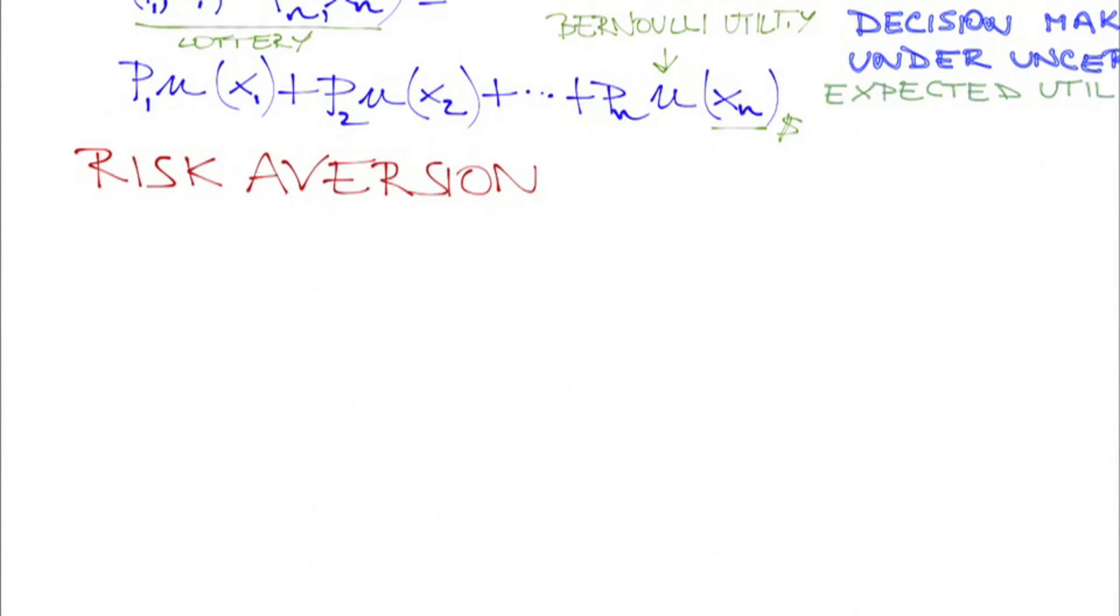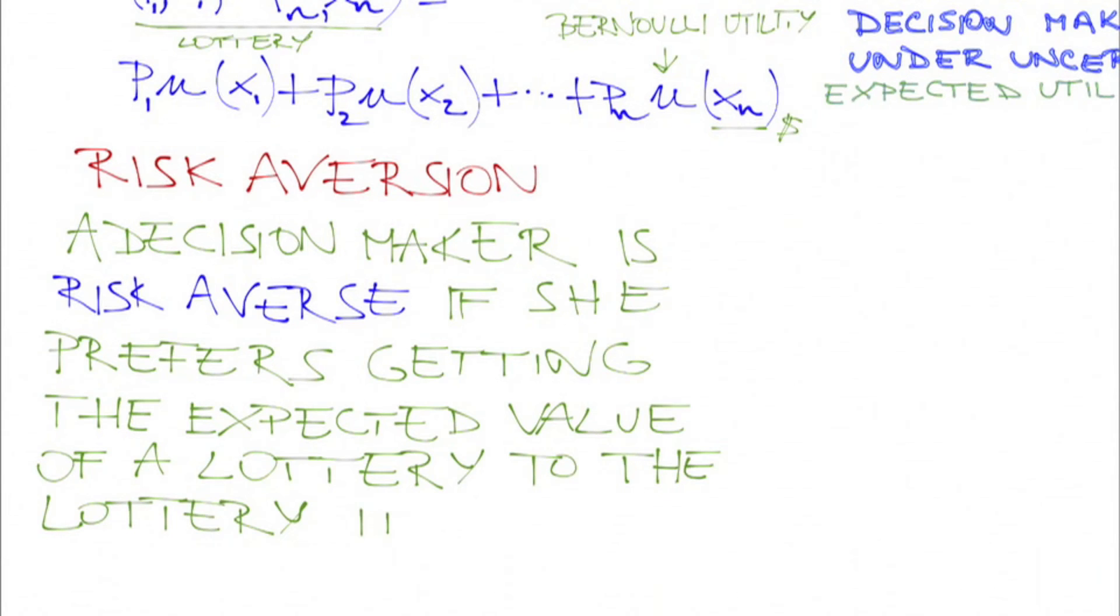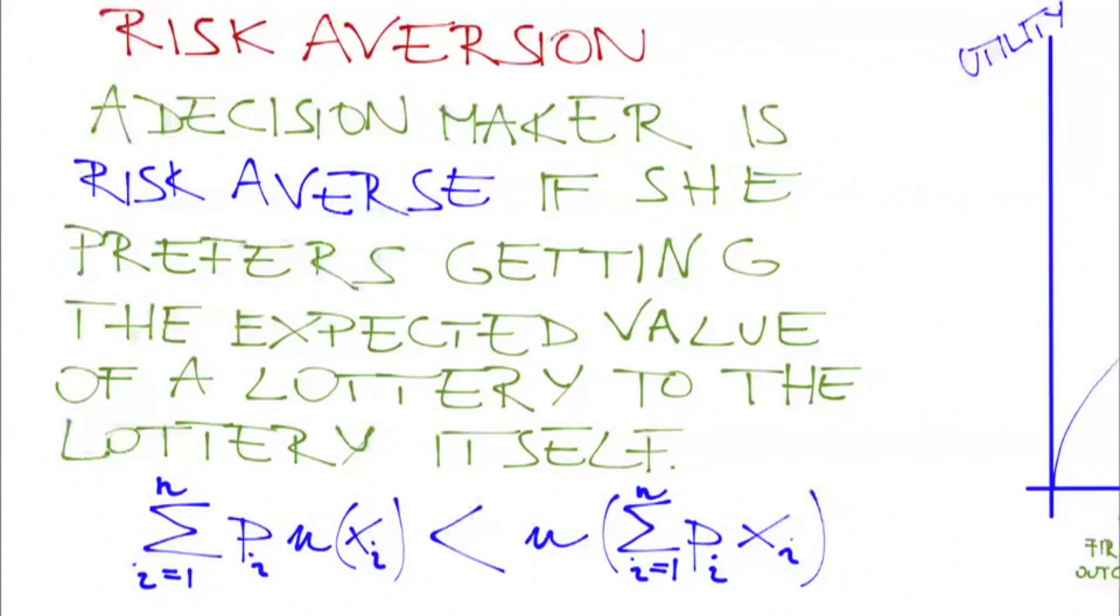So how does a Bernoulli utility function show risk aversion? First, what is risk aversion? A decision maker is risk averse if she prefers just getting the expected value of a lottery to the lottery itself. That is, her expected utility from the lottery is lower than her expected utility from getting the lottery's expected value for sure.